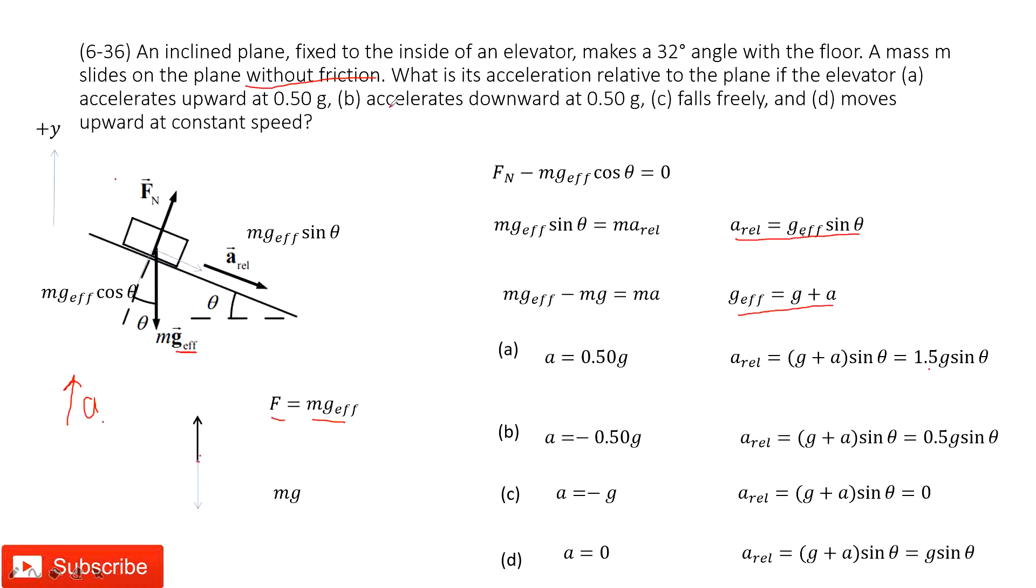The second one tells us the acceleration moves down, 0.5g, so it becomes negative 0.5g. Input it inside, we get the final answer, 0.5g sine theta.